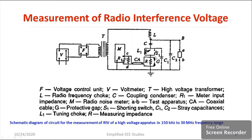We have one coupling capacitor, also called a coupling condenser, to connect different stages. Suppose some partial discharge takes place in the dielectric material. Immediately the signal will come across the particular resistor. That signal will be transferred to the radio interference meter with the help of a coaxial cable. From the meter you can see the range of signal — whether it is a high frequency signal or low frequency signal. Definitely if it is a high frequency signal, that will be the reason for radio interference.